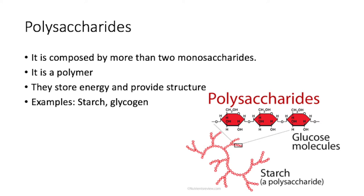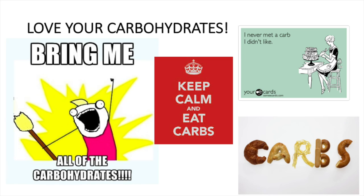In our final category, we have polysaccharides, which are composed of more than two monosaccharides. That's what makes them a polymer. They store energy and provide structure. As examples, we have starch and glycogen. As you can see in the image, there is a perfect example of how monosaccharides are united to form a polysaccharide.